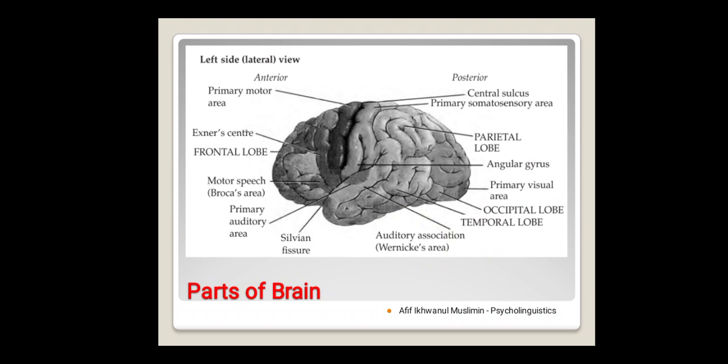From the left side view, we have clearer divisions of the brain. The first is frontal lobe. Here, Exner center is here, Broca's area, as we have discussed before, relates to the works of language production. We have Wernicke's area here, it relates to comprehension.